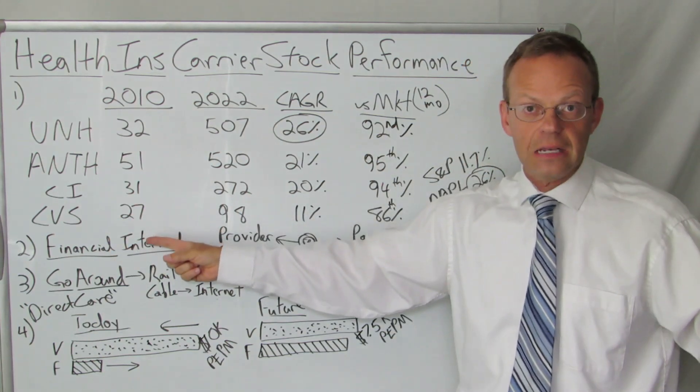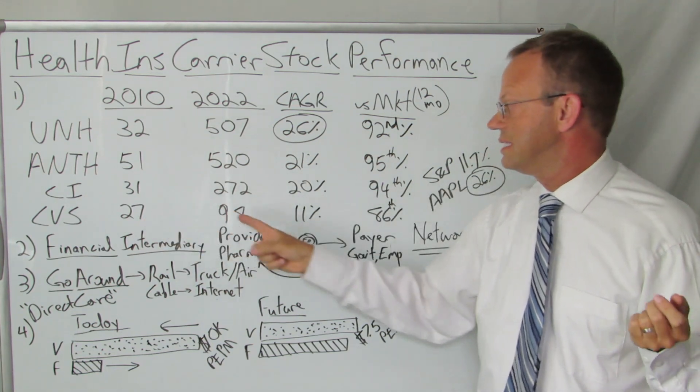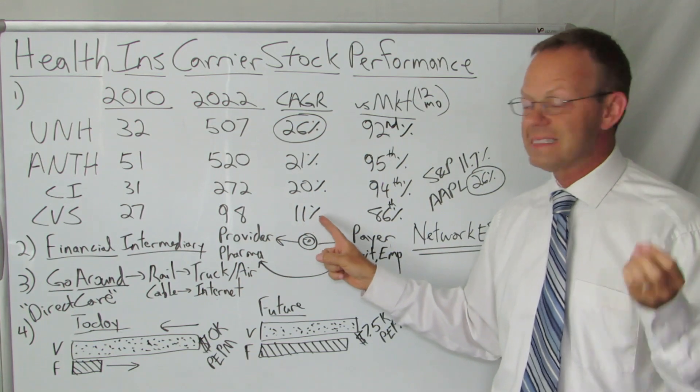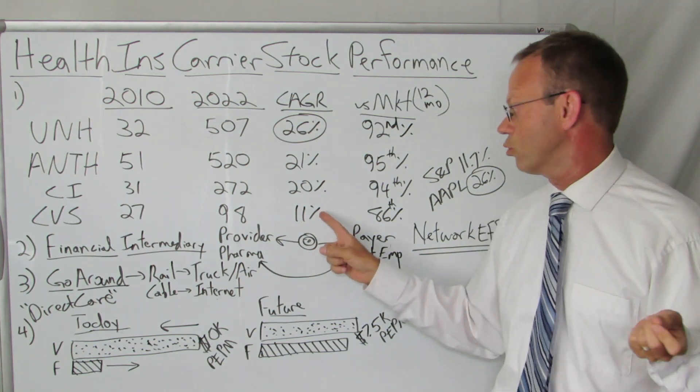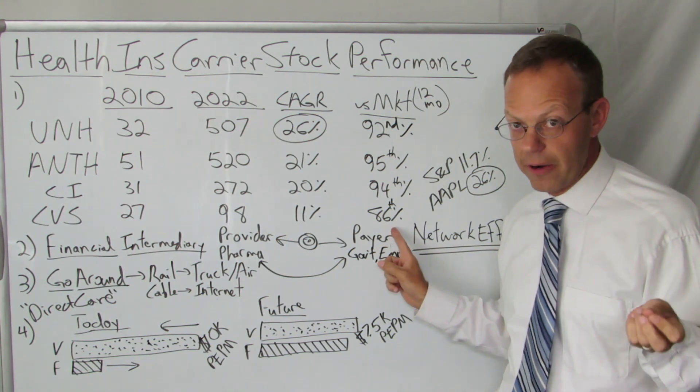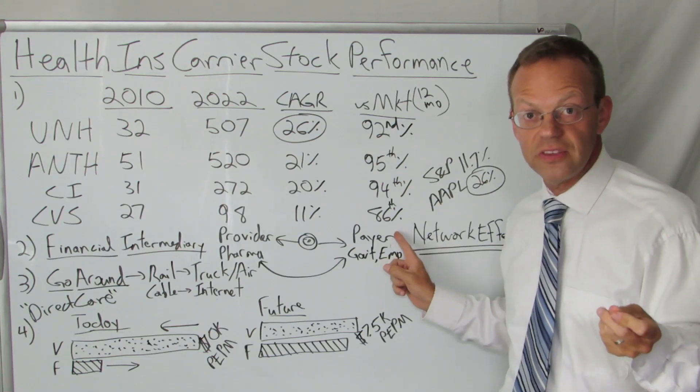CVS Aetna. Back in 2010, they were two separate companies, but they are combined together now. The CVS stock was 27. Now, the combined CVS Aetna stock is at 98. That's an 11% compounded annual growth rate. They are currently in the 86th percentile of all stocks in America for their stock performance in the previous 12 months.